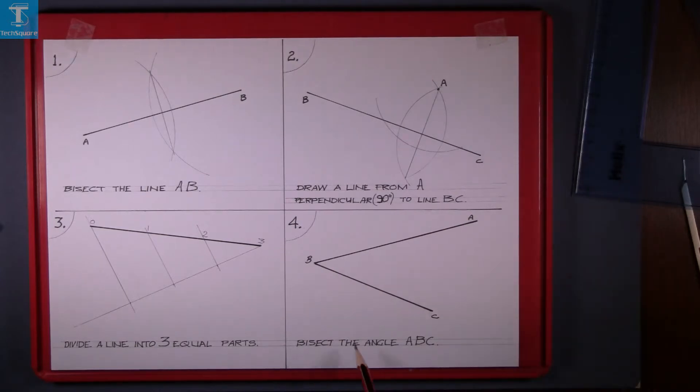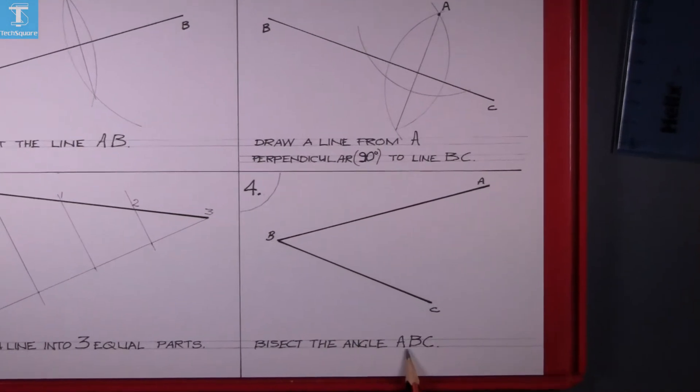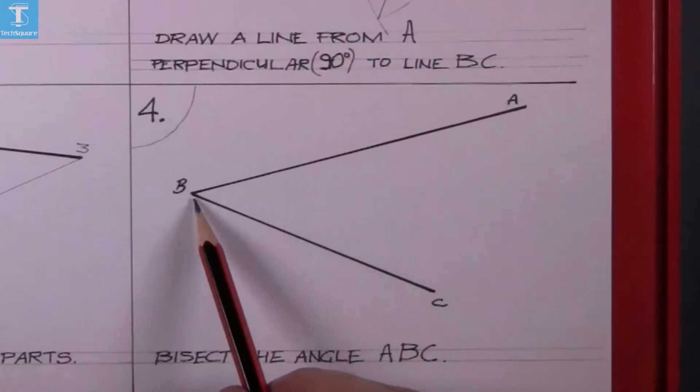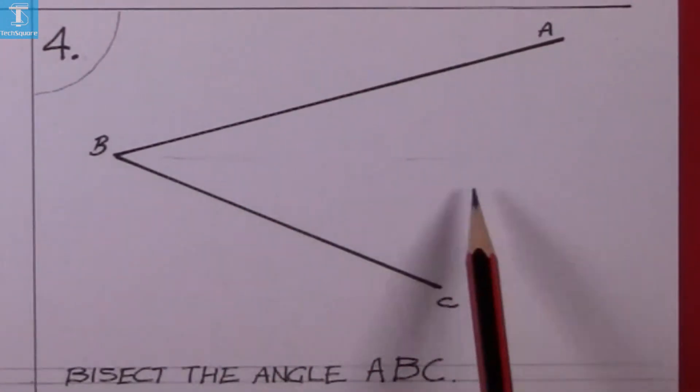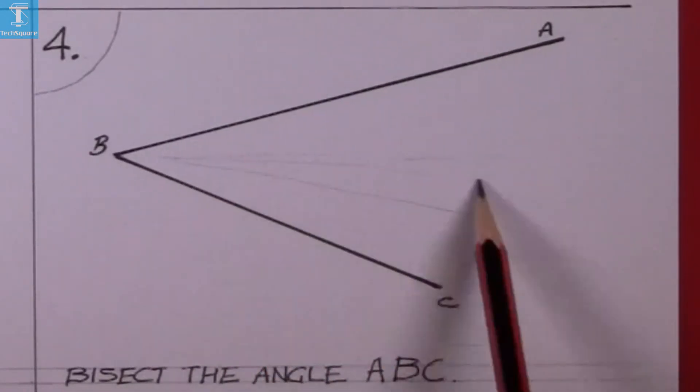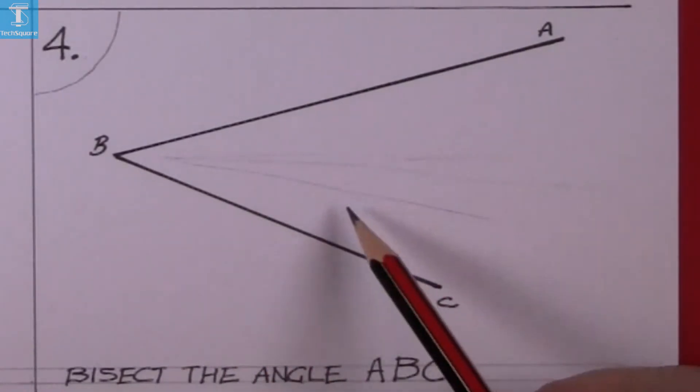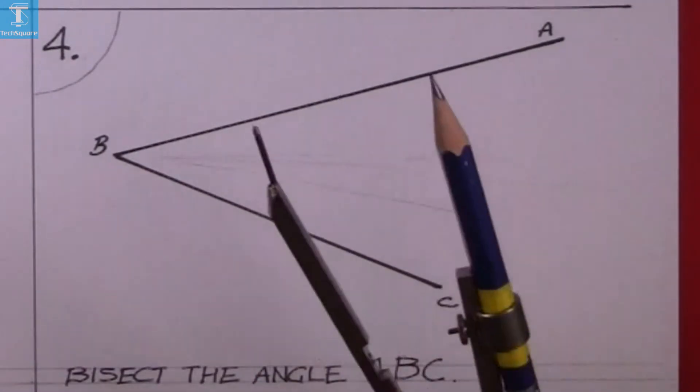Now for question 4. You're asked to bisect the angle ABC. Divide it into two equal angles. So we'll have to find a center line between the two lines.